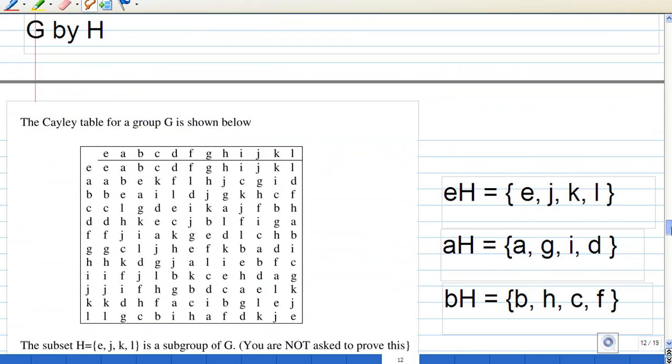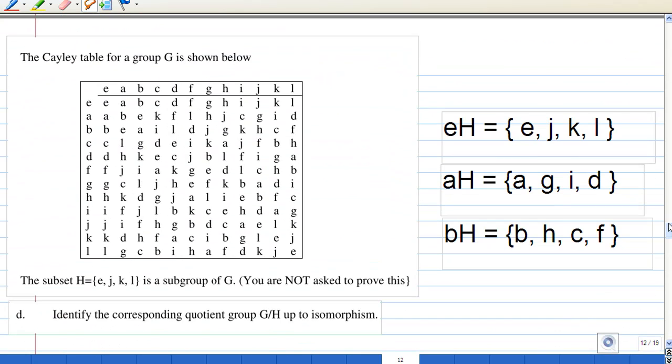Now, let's look at the solution. From the earlier part, we already know that the distinct left cosets of H are eH, aH, and bH. These are all the distinct left cosets of H.